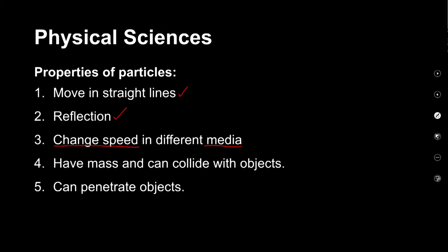Continuing with our tennis ball analogy, the tennis ball will quickly change speed if it hits a surface that is rougher or smoother. Our tennis ball also has a mass — that's how we are able to consider it a particle — and it is this mass that means it is able to collide with other objects. The last property of particles we need to consider is that they are able to penetrate objects when projected with high amounts of energy.